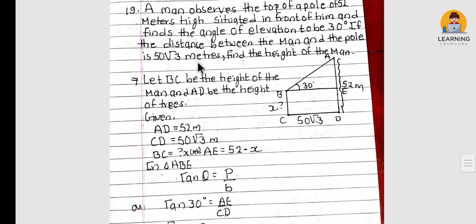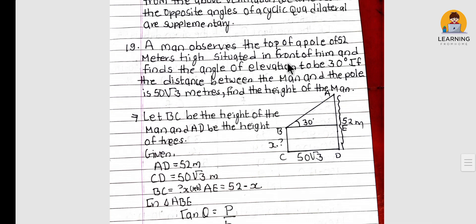A man observes the top of a pole 52 meters high situated in front of him and finds the angle of elevation to be 30°. If the distance between the man and the pole is 50√3 meters, find the height of the man.